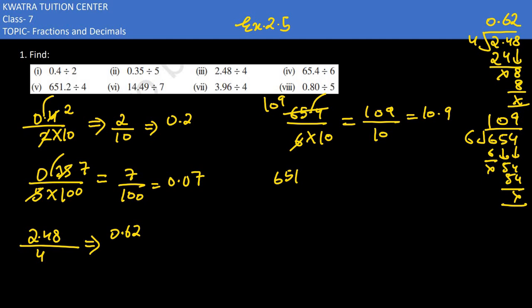The 5th one is 651.2 divided by 4. We do the same here — remove the decimal, 10 comes in the denominator. We need to see if 6512 is divisible by 4 — yes, it will be divisible giving 1628. So 1628 divided by 10 would give 162.8 as the answer, because the decimal is placed one place from the end.